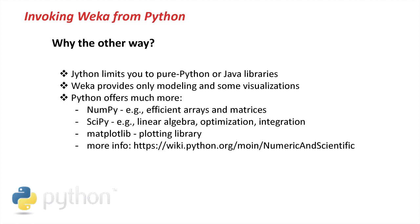Jython limits you basically to pure Python code and to Java libraries. And Weka provides only modeling and some limited visualizations. However, Python has so much more to offer. For example, NumPy, a library for efficient arrays and matrices. SciPy for linear algebra, optimization and integration. There's Matplotlib, a great plotting library. You can check all this out on the Python Wiki under the Numeric and Scientific Libraries.